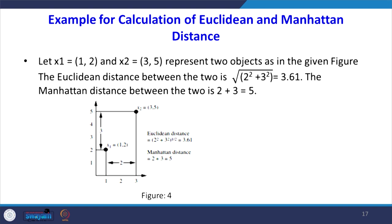Let us take an example and calculate these distances. Let x1 = (1, 2) and x2 = (3, 5) represent two object points. The Euclidean distance between x1 and x2 is √(2² + 3²) = √13 = 3.61. The Manhattan distance between the two points is |2| + |3| = 5. The Euclidean distance is smaller than the Manhattan distance, because in Manhattan distance you cannot take a direct route — you must take a rectangular path, which is longer.